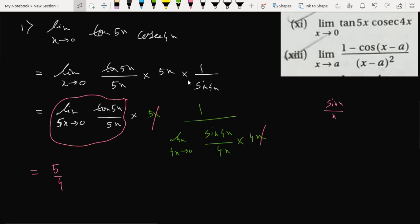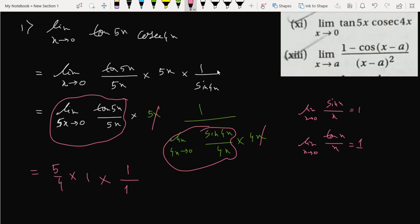And this will become 1, as we know sine theta by theta or sine x by x equals 1 for limit x tends to 0, as well as tan x by x also equals 1. So it becomes 5 by 4. This is our answer. So let's see how we can solve the second one.